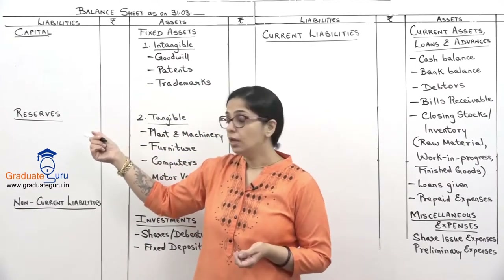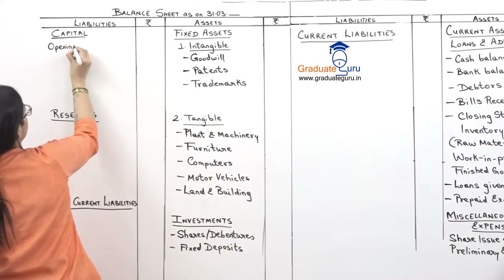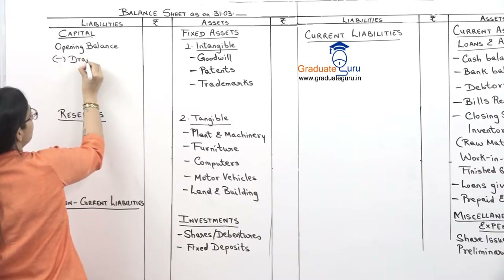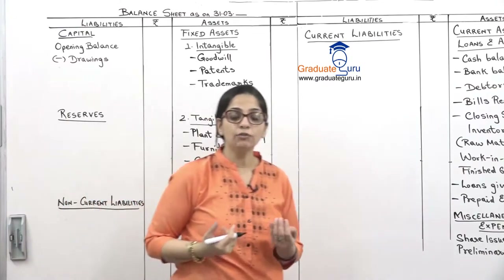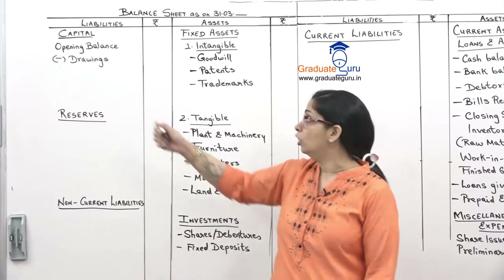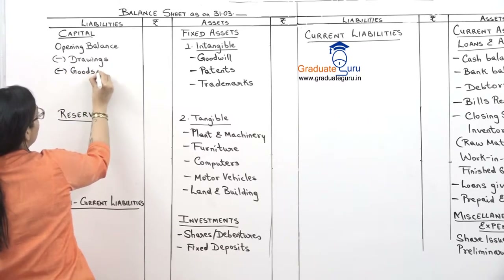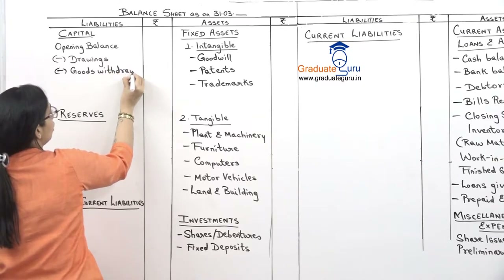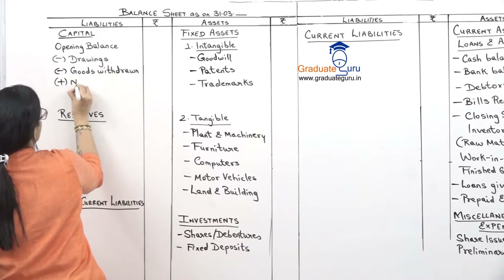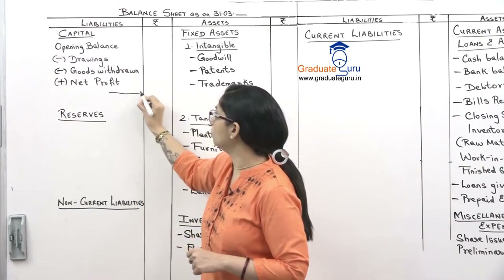Now we come to the liability side. The first thing is capital. Capital — they will give us an opening balance in the trial balance, and we will start with that opening balance. If the proprietor has made any drawings — that means he has taken money from the business for personal use — that will be subtracted. Similarly, if the proprietor has taken some goods, that goods withdrawn amount is also subtracted. Then we add the net profit to get the final capital balance.